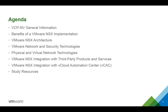So what does the blueprint actually request from you in objective one? The first thing is that you will need to be able to explain the benefits of a VMware NSX implementation. You will need to describe the VMware NSX architecture, and describe network and security technologies — both physical and virtual. You will also need to describe third-party integration of NSX services, and describe how vCAC integrates with NSX.